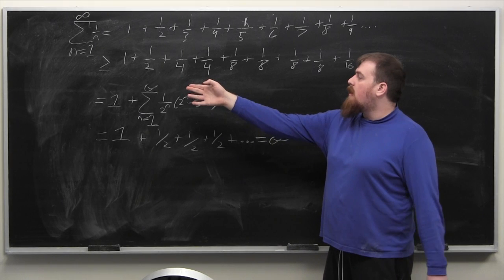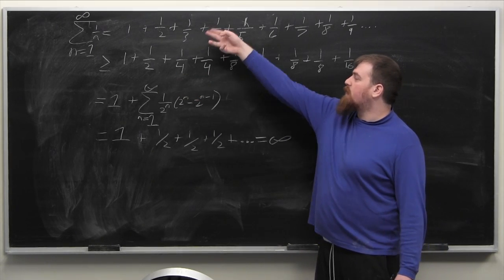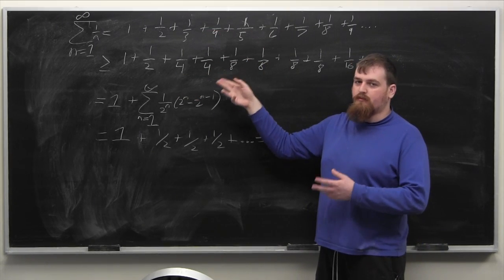This is going to be greater than or equal to the sum which is gotten by diminishing every reciprocal to the next reciprocal of a power of 2.